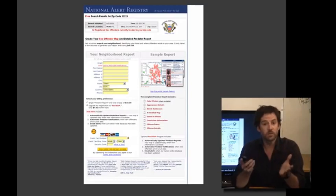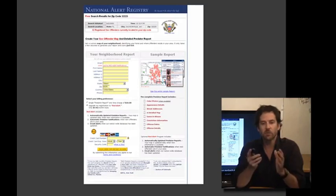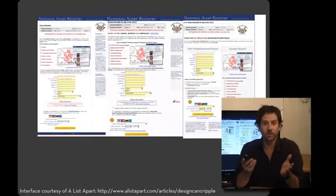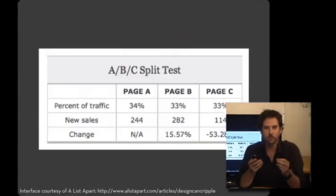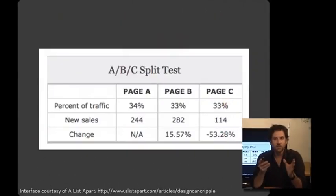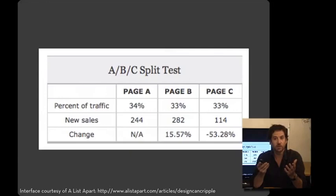Before I show you the results, think about which of these three user interfaces you believe to be the most effective, and how you might measure which works best. Here you can see all three of them together. What you can see is that this third version, the two-column version, although it was intended to be much more effective — a redesigned version that people hoped would improve things.